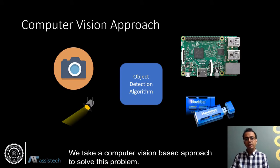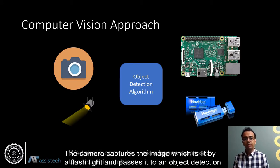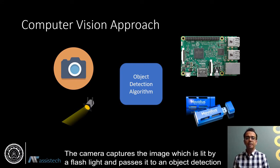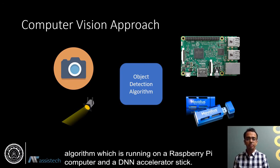We take a computer vision based approach to solve this problem. The camera captures the image which is lit by a flashlight and passes it to an object detection algorithm which is running on a Raspberry Pi computer and a DNN accelerator stick.